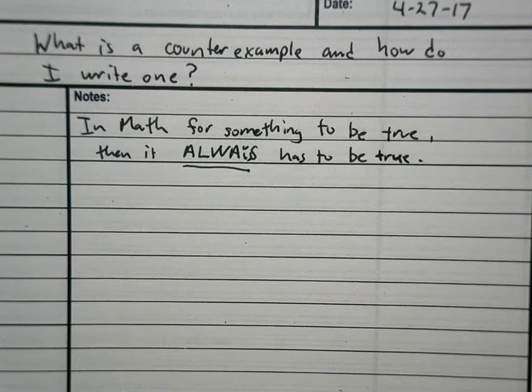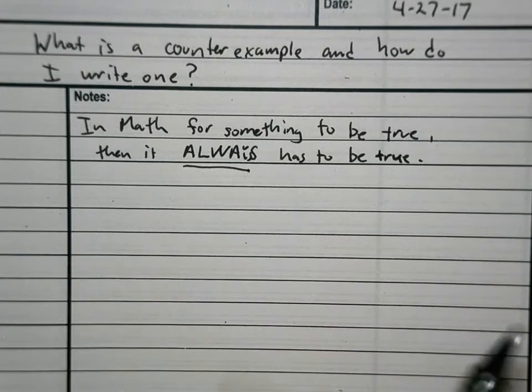When you make a statement in math, that statement needs to always be true. For example, 2 plus 2 is always 4. In order for that to be true, it has to always be true. It can't be sometimes true, sometimes 2 plus 2 is 4. No, it's always 4.